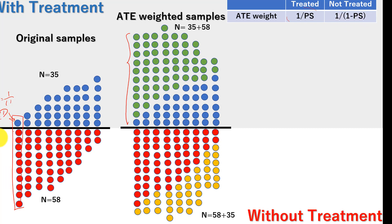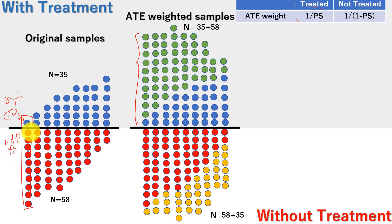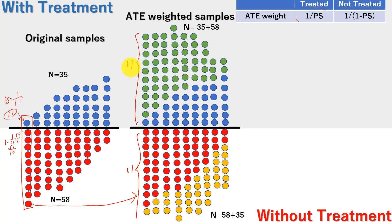For the first column with PS = 1/11: the treated dot gets weight 11 (i.e., 1 over 1/11), so 1 dot becomes 11. For untreated, 1 over (1 minus 1/11) = 11/10, so each of the 10 dots gets weight 11/10, meaning 10 dots become 11. Now the number of treated and untreated dots is balanced.